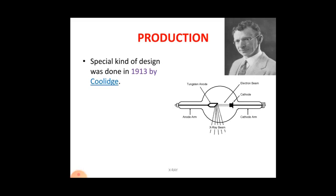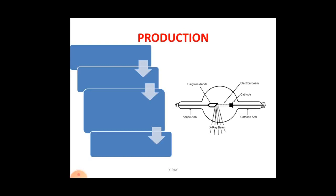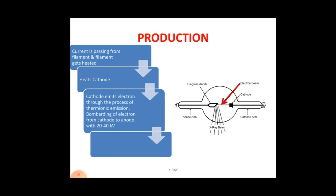A special design for x-ray production was given by Coolidge in 1913. The sequence of production is: current passes through the filament, heating it. The heated filament hits the cathode. The cathode, being negatively charged, emits electrons through thermionic emission — emission of electrons from a heated source. These electrons bombard from cathode to anode with 20 to 40 kilovolts, and by this process x-rays are emitted from the anode.